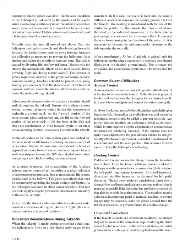Crosswind Considerations During Takeoffs. When the takeoff is made during crosswind conditions, the helicopter is flown in a slip during the early stages of the maneuver. The cyclic is held into the wind a sufficient amount to maintain the desired ground track, and the heading is maintained with the use of anti-torque pedals. In other words, the rotor is tilted into the wind so the sideward movement of the helicopter is just enough to counteract the crosswind effect. To prevent the nose from turning in the direction of the rotor tilt, it is necessary to increase anti-torque pedal pressure on the side opposite the rotor tilt. After approximately 50 feet of altitude is gained, crab the helicopter into the wind as necessary to maintain coordinated flight over the desired ground track.